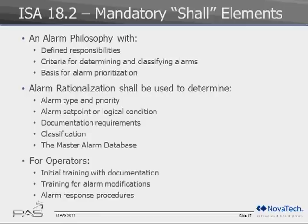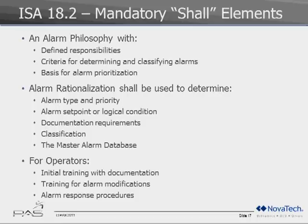The mandatory shall elements of 18.2 start with an alarm philosophy — defining responsibilities, criteria for creating alarms, and the basis for a prioritization system. There may be three or four alarm priorities, all of which must be defined in a philosophy document. The heavy lifting really comes in alarm rationalization, where you go through each alarm by type and priority, determining the set point, consequences, cause, and corrective actions so that when the alarm goes off, the operator knows exactly what to do.